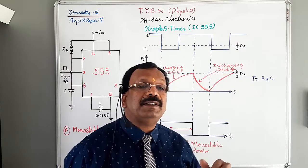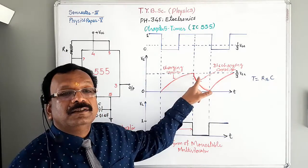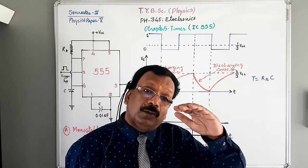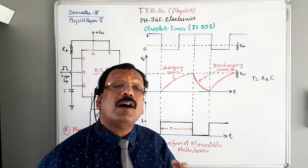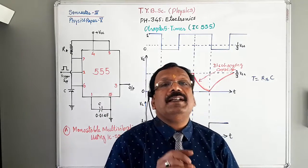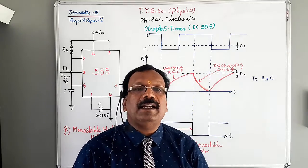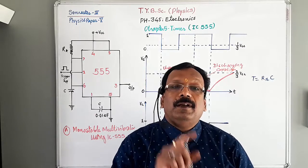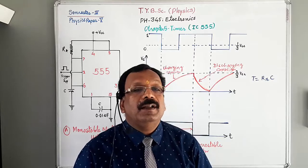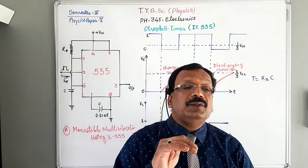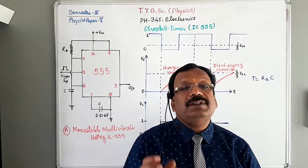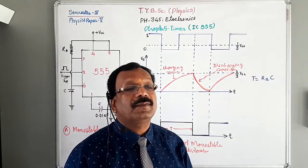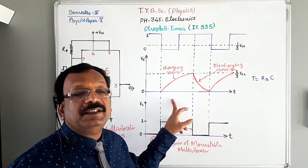When the voltage across the capacitor reaches the threshold level — that is, two-thirds VCC — the output of the upper comparator (comparator 1) goes high. When the upper comparator output goes high, it resets the flip-flop, so Q = 0 and Q̄ = 1. When output is low, the discharge transistor turns on and the capacitor discharges. This discharging is shown by the discharging curve in the charging and discharging waveform.